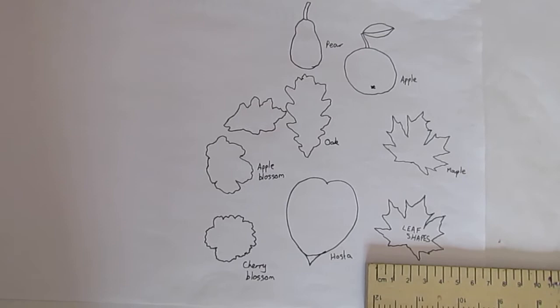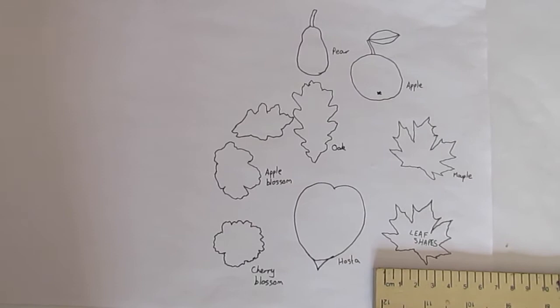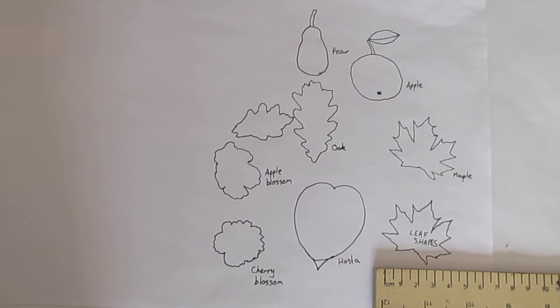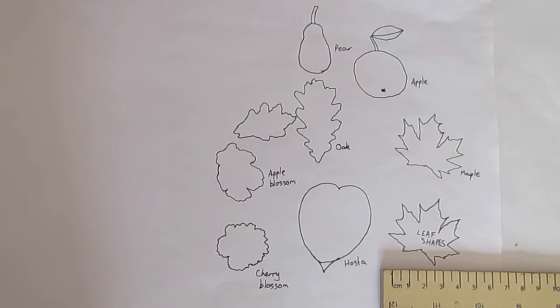Before you actually start your tree, one really good thing you can do is to look up different kinds of leaves and different shapes and trace out an outline of whatever kind of leaf you can find just as a little bit of inspiration.